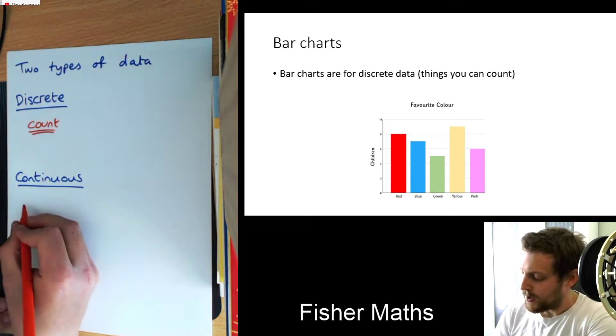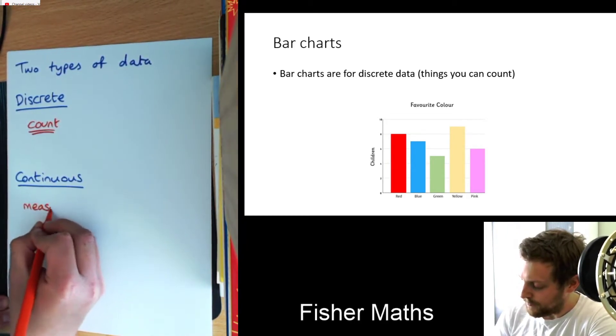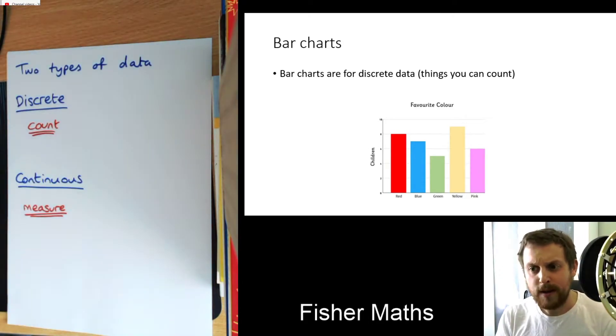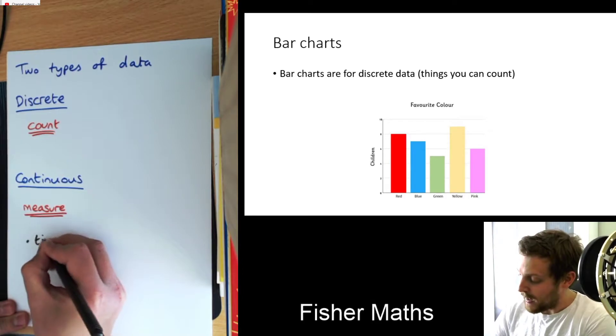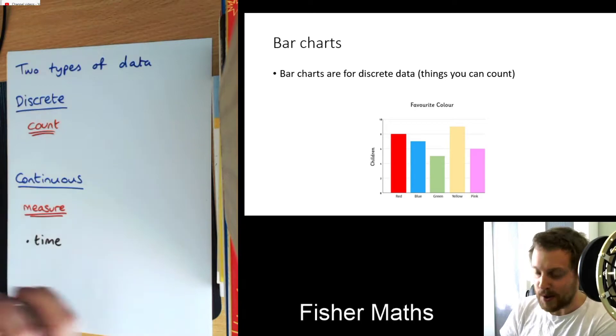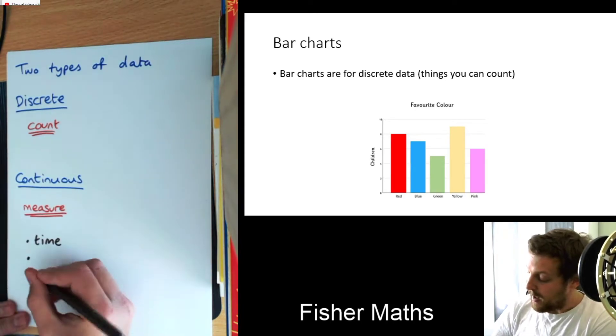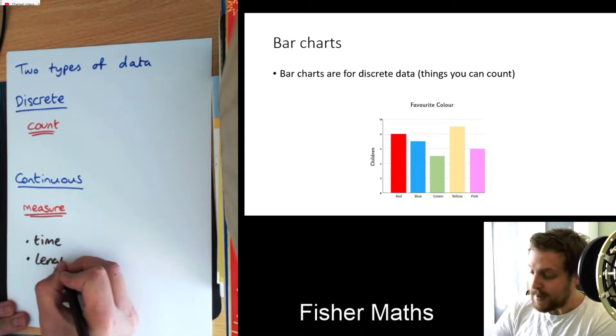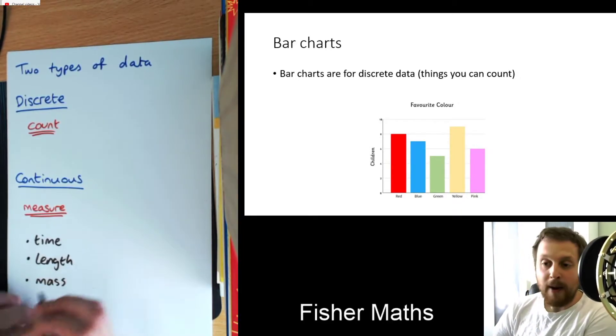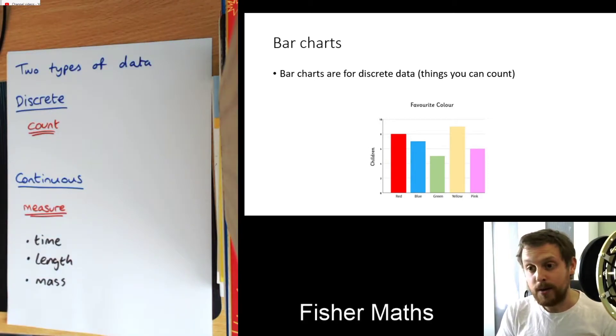But it's just to do with counting things. Continuous data is stuff you measure and will usually require some special bit of equipment. So the examples that I'll list here are things like time, where you might use a clock, you might use a stopwatch. Length or height, you might use a ruler. Mass, how heavy you are. So you might use some scales, right?